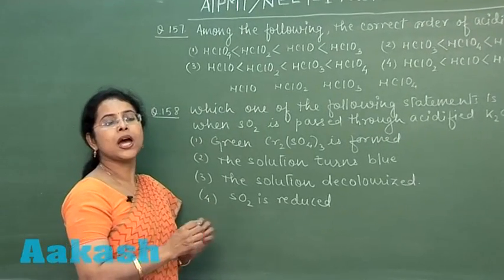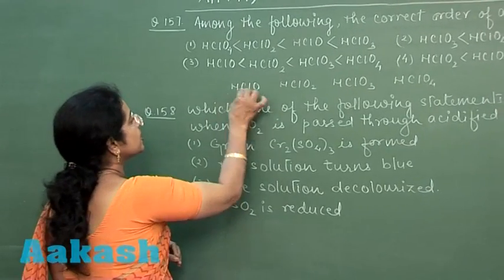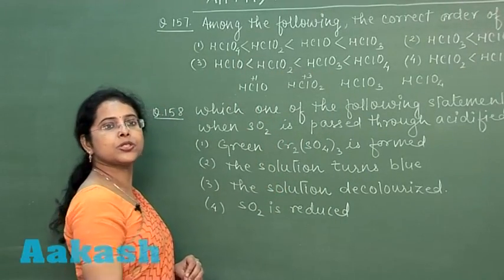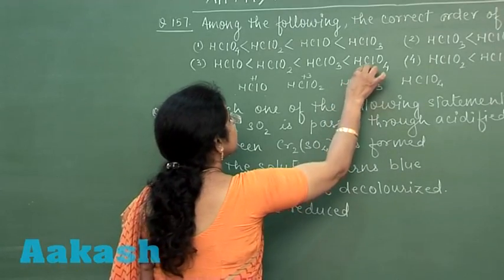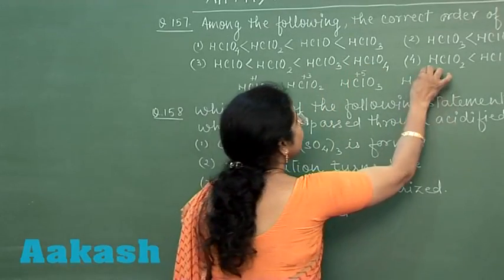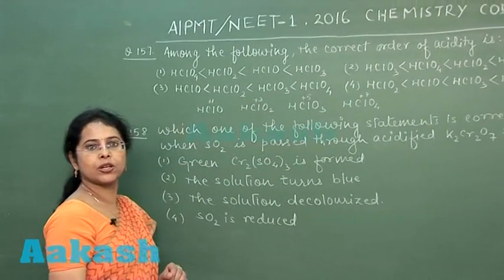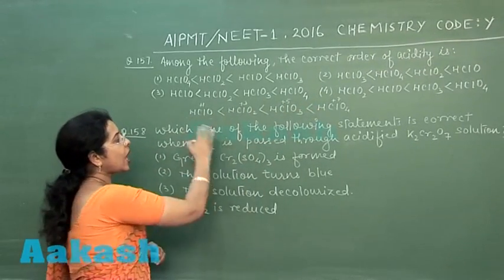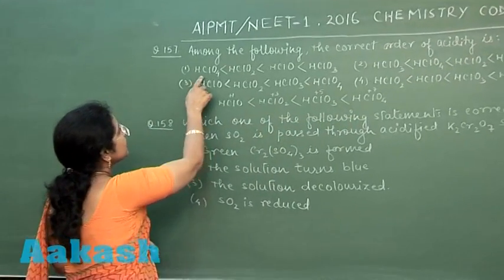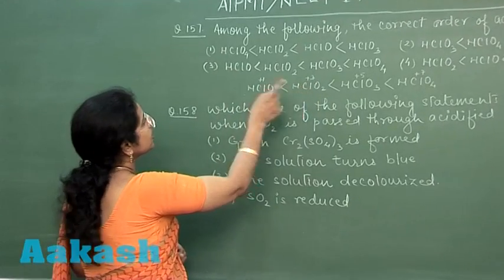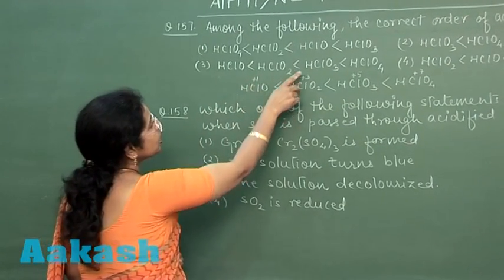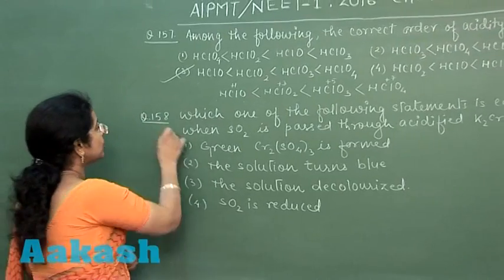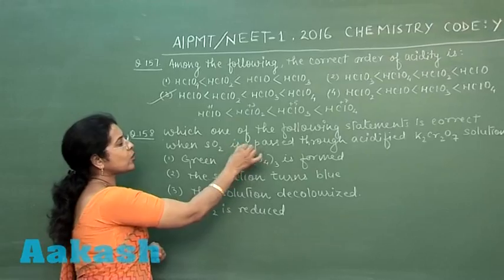If oxy acids of the same element are given, then the basic rule is: higher the oxidation state of central atom, higher will be the acidic strength. In HClO, chlorine is present in +1 state. In HClO2, it is +3 oxidation state. In HClO3, it is +5, and in HClO4, it is +7. So higher the oxidation state, higher will be the acidic strength. The correct answer is third option.